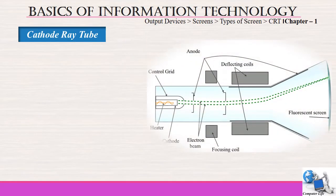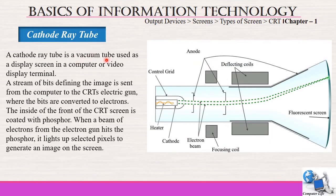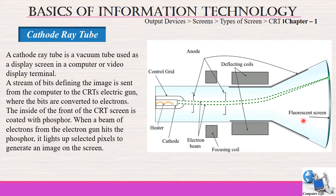Cathode ray tube is a vacuum tube used as a display screen in a computer or video display terminal. Please note in the diagram that one portion belongs to the vacuum tube and the other to the display terminal. A stream of bits defining the image is sent from the computer to the CRT's electron gun where the bits are converted to electrons. The inside of the front of the CRT screen is coated with phosphorus. When a beam of electrons from the electron gun hits the phosphor, it lights up selected pixels to generate an image on the screen.